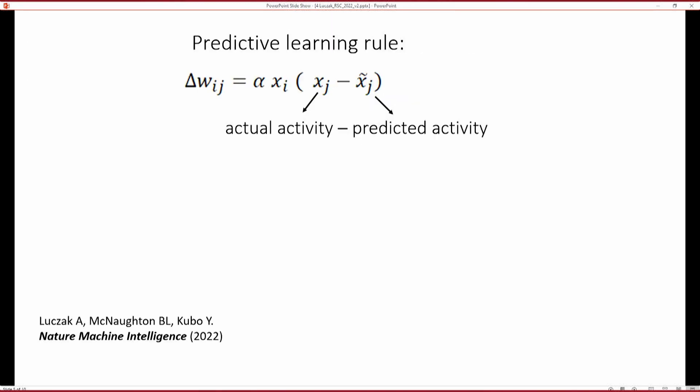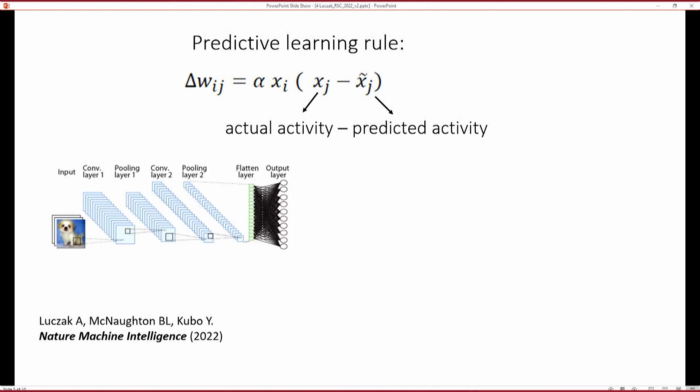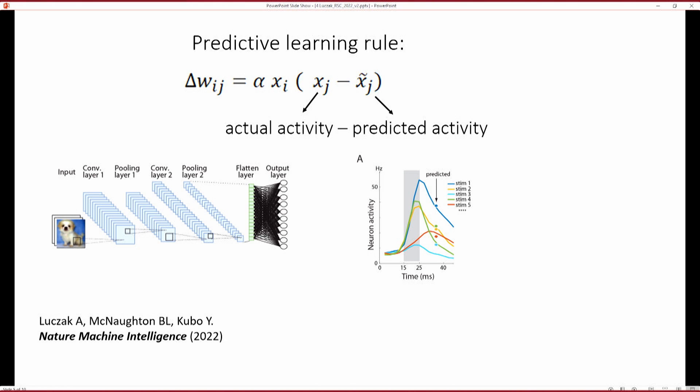So we apply this predictive learning rule in some artificial neural networks and it worked quite well. Also, we did some experiments and show that neurons, indeed, it's possible to make predictions what is the activity, what will be the activity in 10, 20, or 50 milliseconds later. So it means that neurons are probably much smarter than we give them credit for.